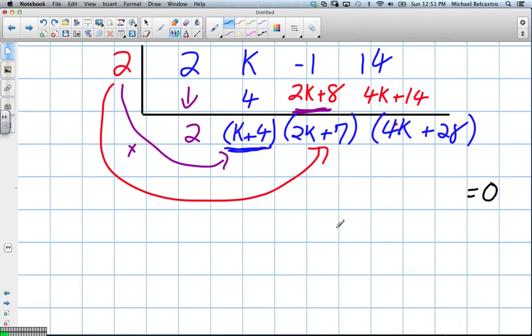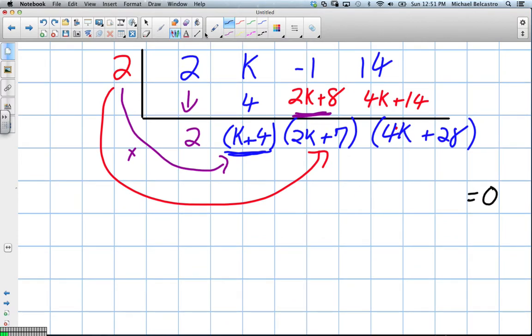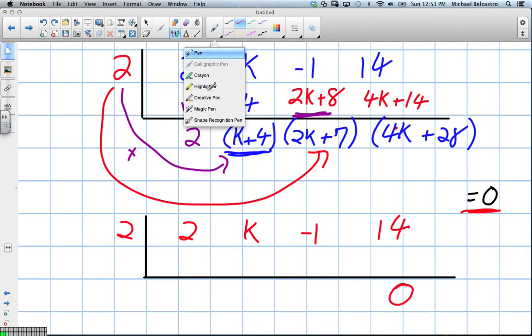What we can do using this information above, we're going to use it again. We're going to rewrite this out with our coefficients. We have 2, 2, k, negative 1, and 14. Well, we know that this at the end is going to be 0 because this is a factor. So with that being said, what value would I have to add to 14 to get 0? Negative 14.